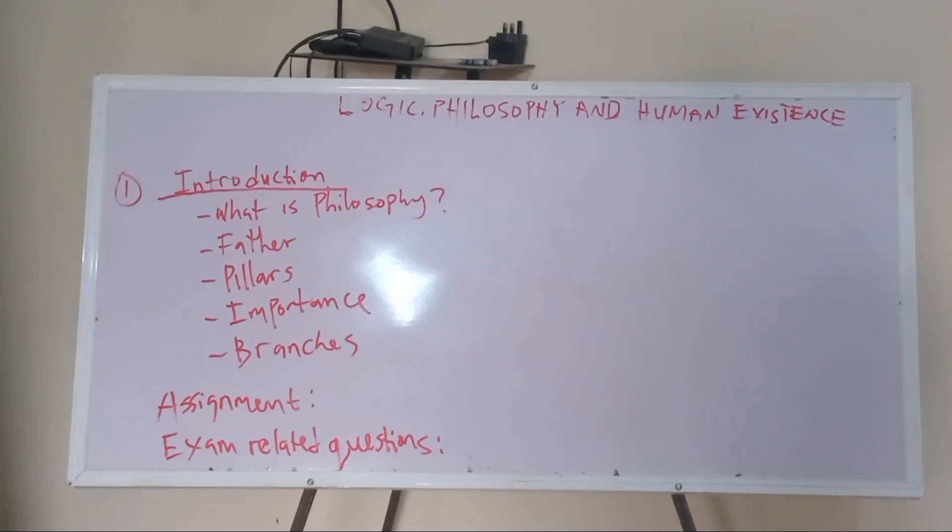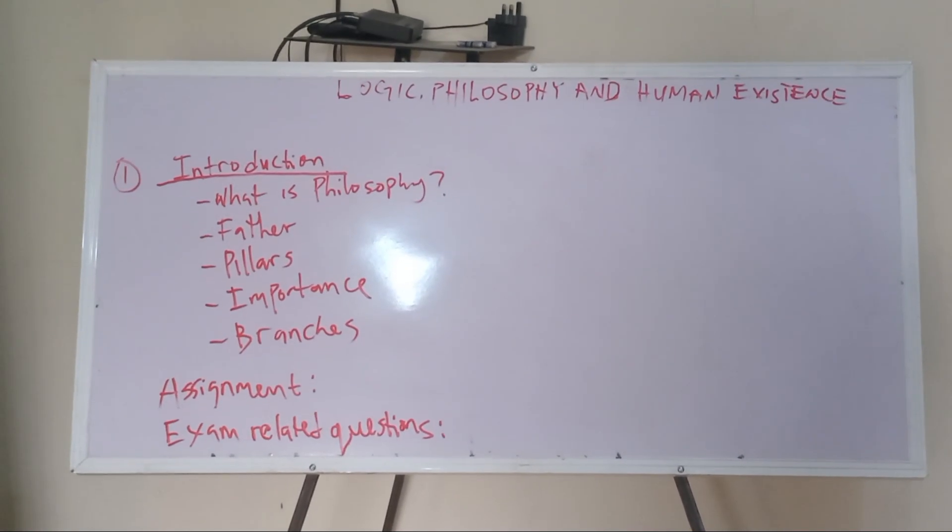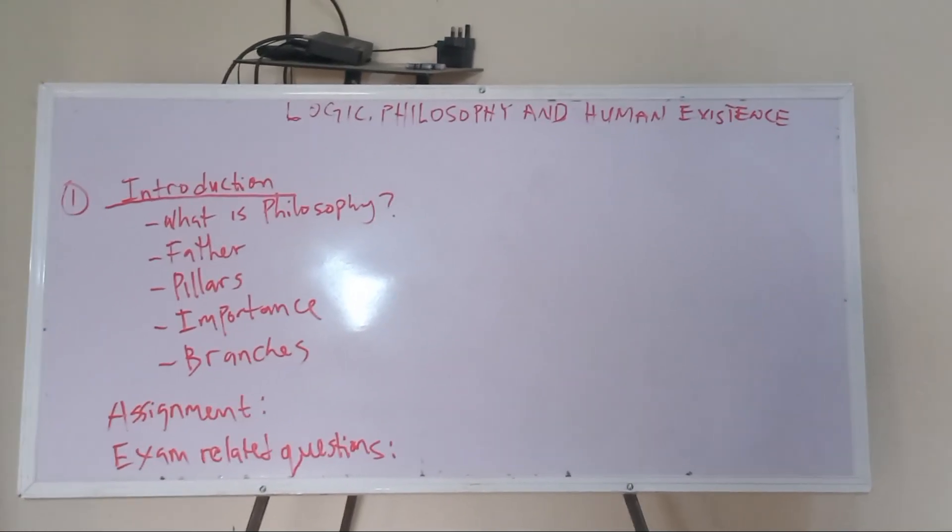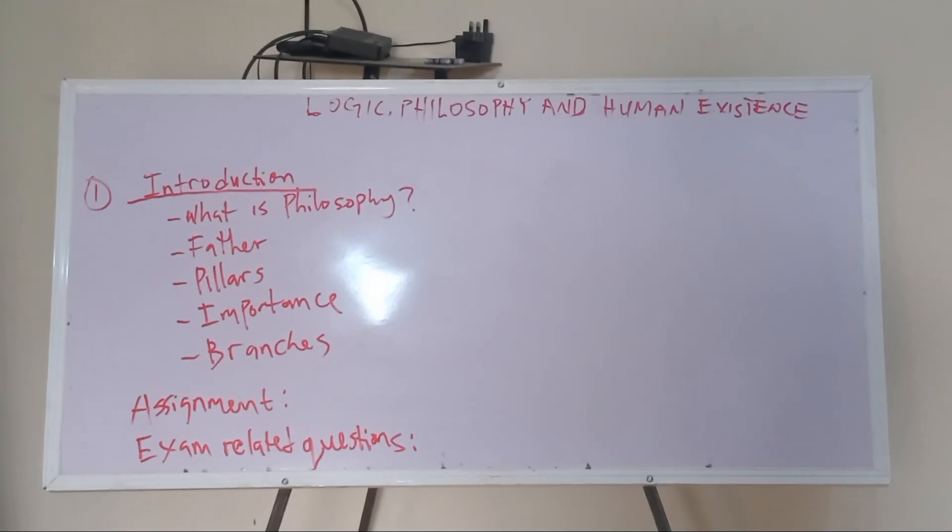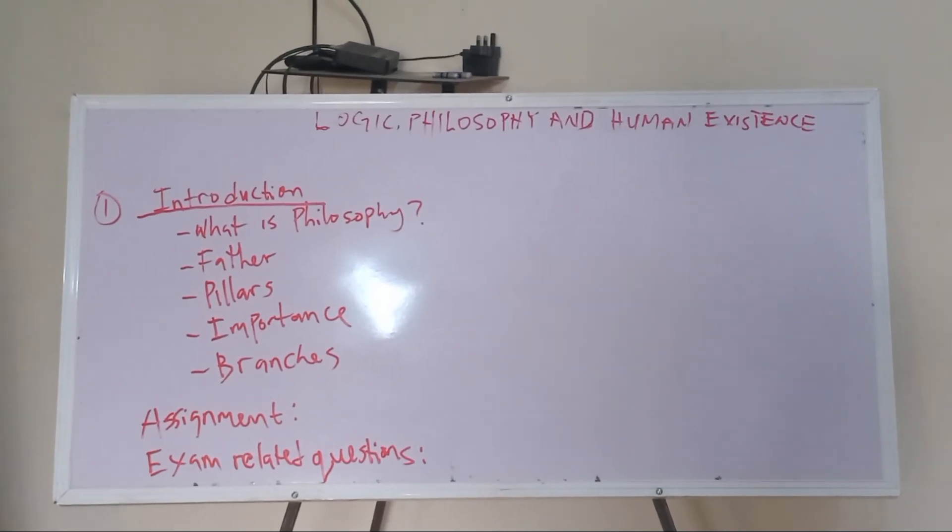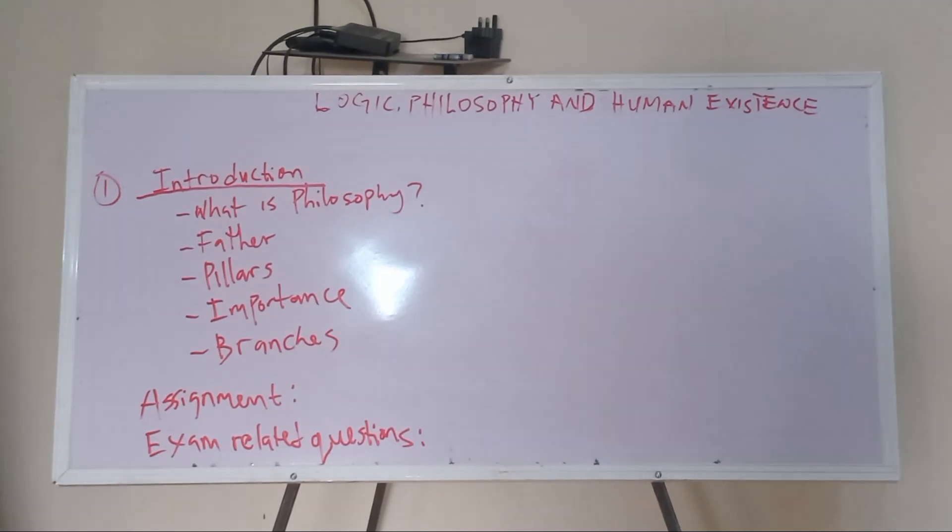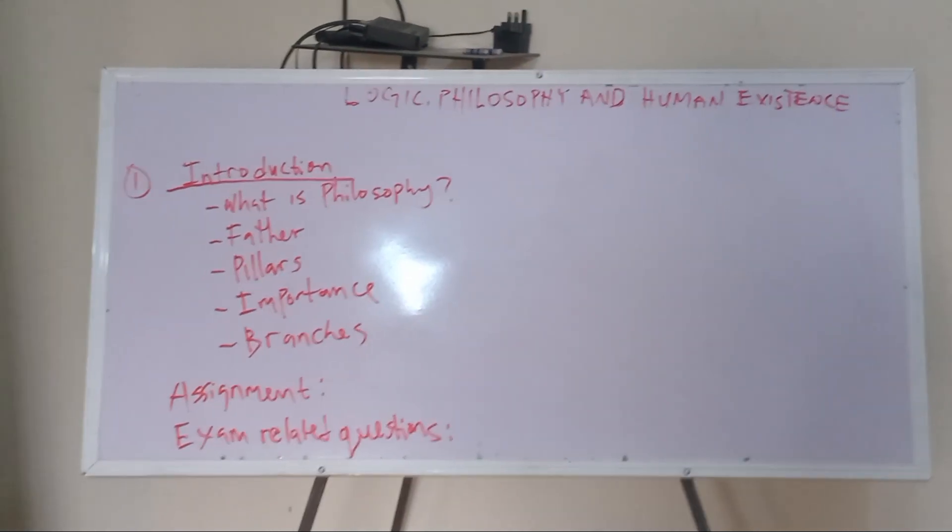And if you want to break it down from the two into four, we have metaphysics, epistemology, ethics, social and political philosophy. The aesthetics can be along with social and political philosophy. So that makes the four pillars.